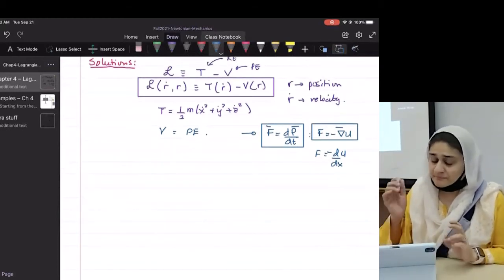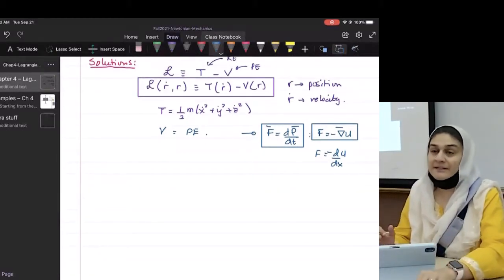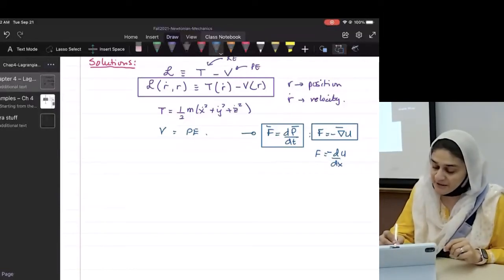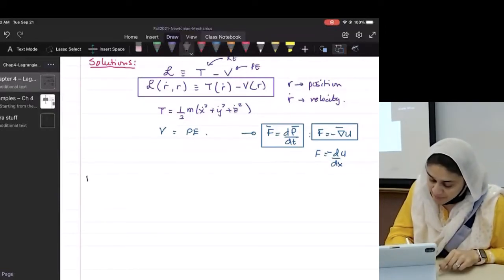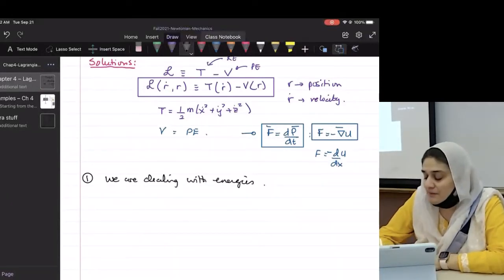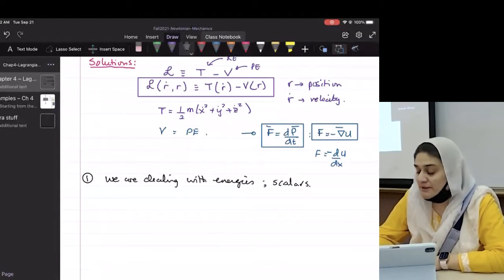Okay, this is how he defined it. Now, what is the advantage of defining it this way? Well, the first advantage that he came up with is that we are dealing with energies, and energies are always scalars. So we do not have to worry about vectors.